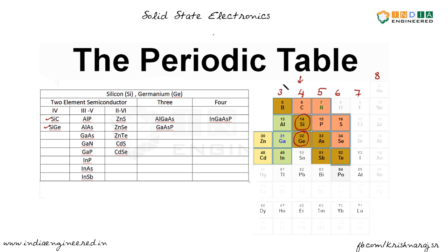Third and fifth group elements form compounds such as aluminium phosphide, aluminium arsenide, gallium arsenide, gallium nitride, and gallium phosphide. We can see these here — aluminium phosphide, gallium phosphide, gallium nitride — they form semiconductor compounds as well.